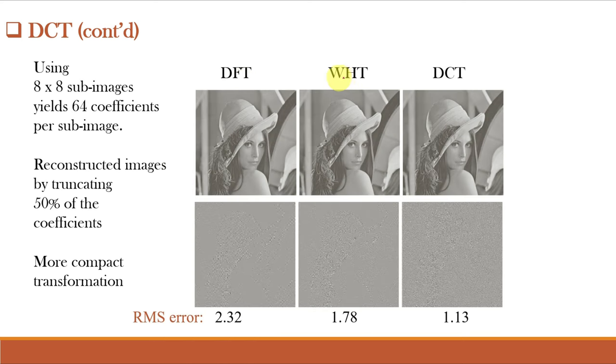Comparing DFT, Walsh-Hadamard transform and DCT, we can see that DCT gives more compact transformation as well as the RMS error that is the difference between the original image and the reconstructive image is minimum for DCT.